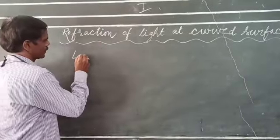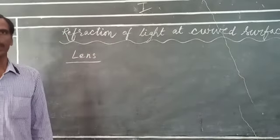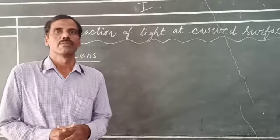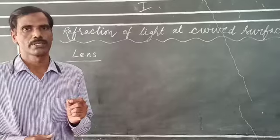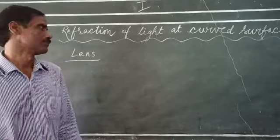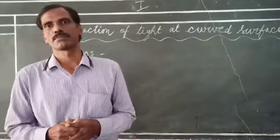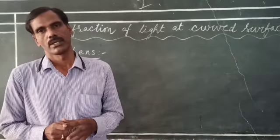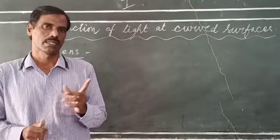Let us discuss the term lens. A lens is nothing but a transparent material which is bounded by two surfaces, of which one or both the surfaces are spherical — or more generally, curved surfaces.